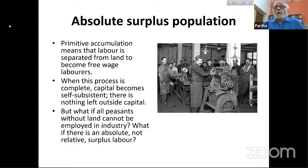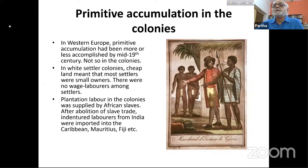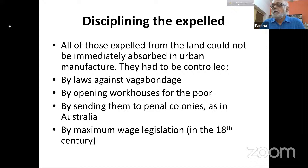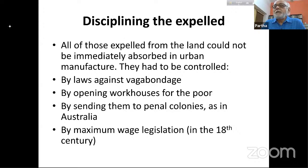This is Sanyal's question: what if all peasants without land cannot be employed in industry? What if there is an absolute, not a relative, surplus labor? Marx did consider that all those expelled from the land could not be immediately absorbed — they had to be controlled. This population remained available to be employed — a relative surplus population, or 'reserve army of labor.' But Sanyal speaks of a population which is an absolute surplus — which can never be employed.